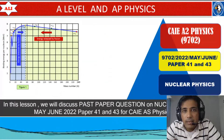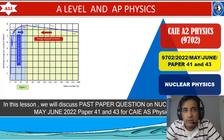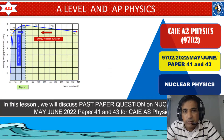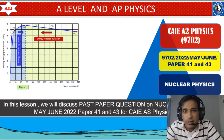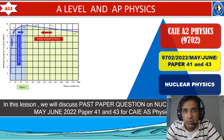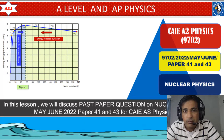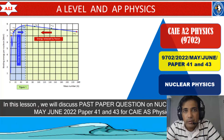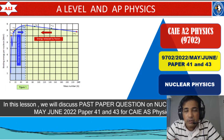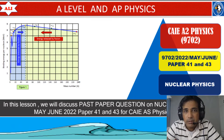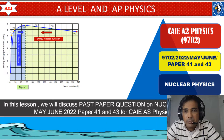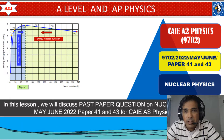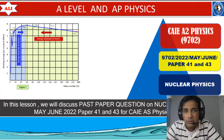Welcome to A-Level and AP Physics. In today's lesson, we will discuss a typical type of question on Nuclear Physics from May June 2022, Paper 4, Variant 1. In this question, we will discuss some very important points about this topic.